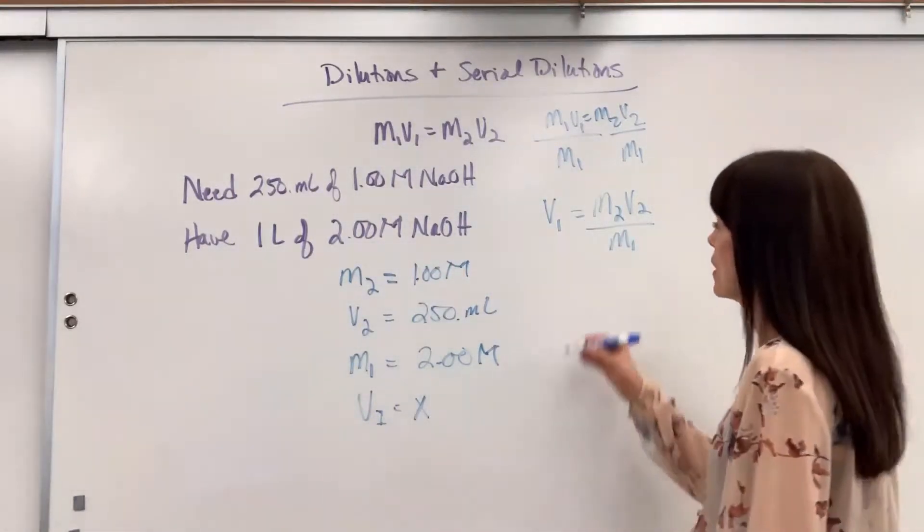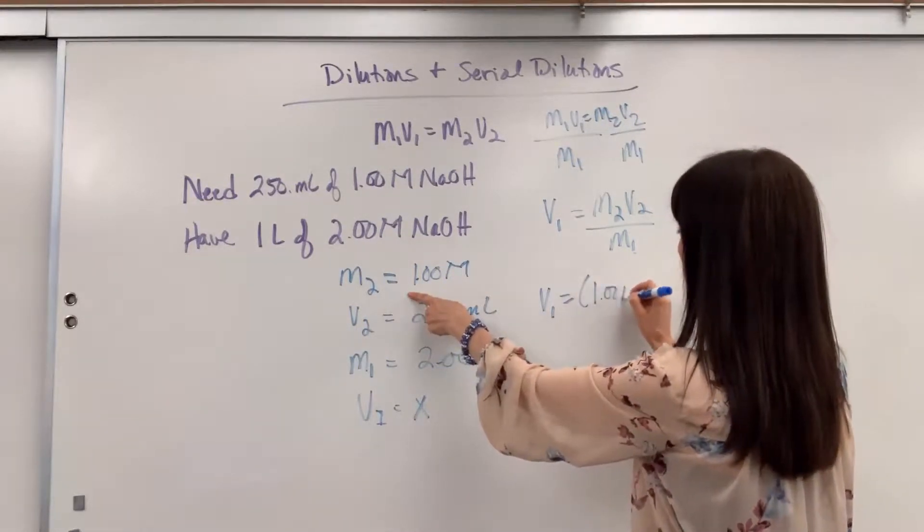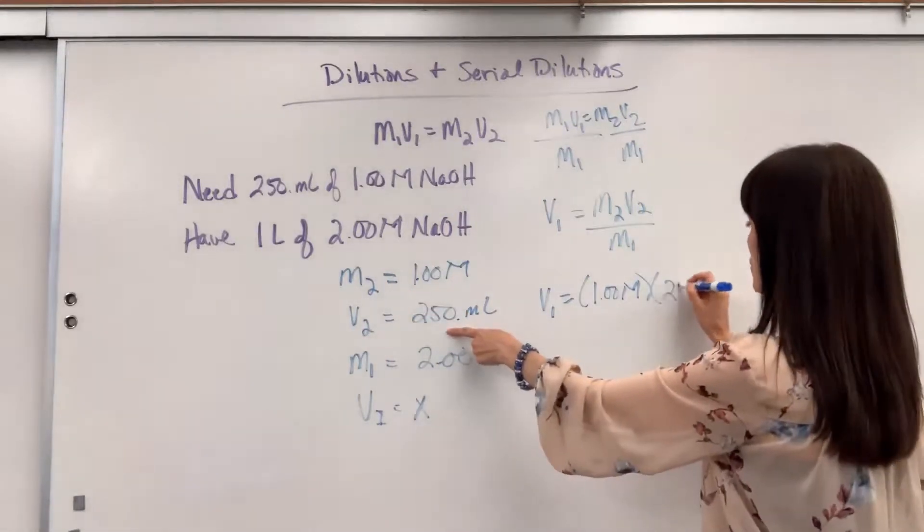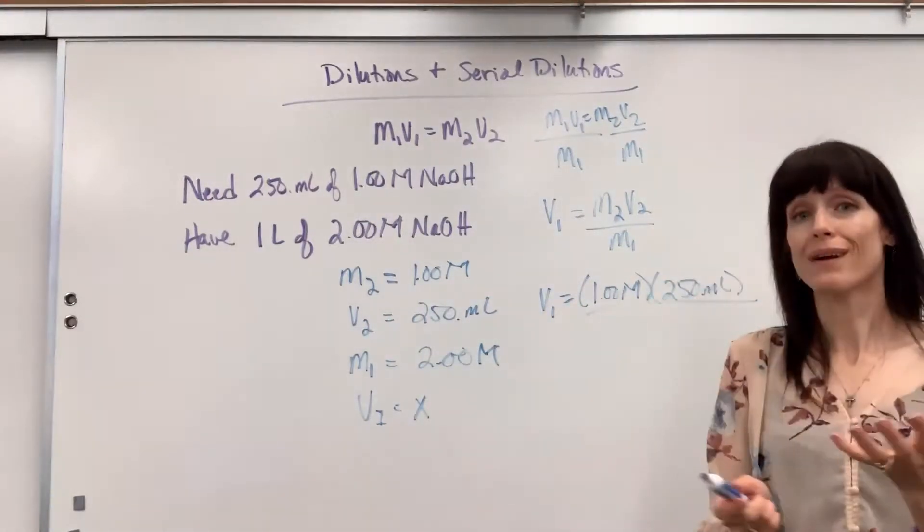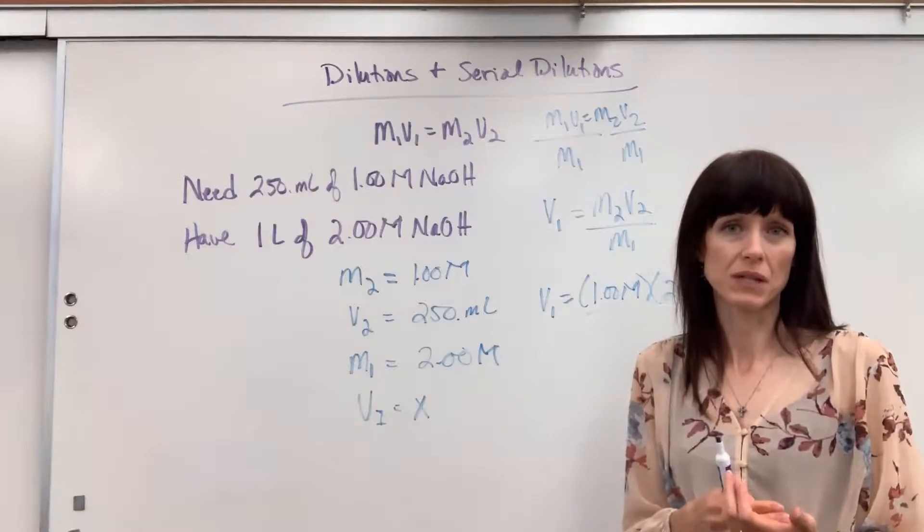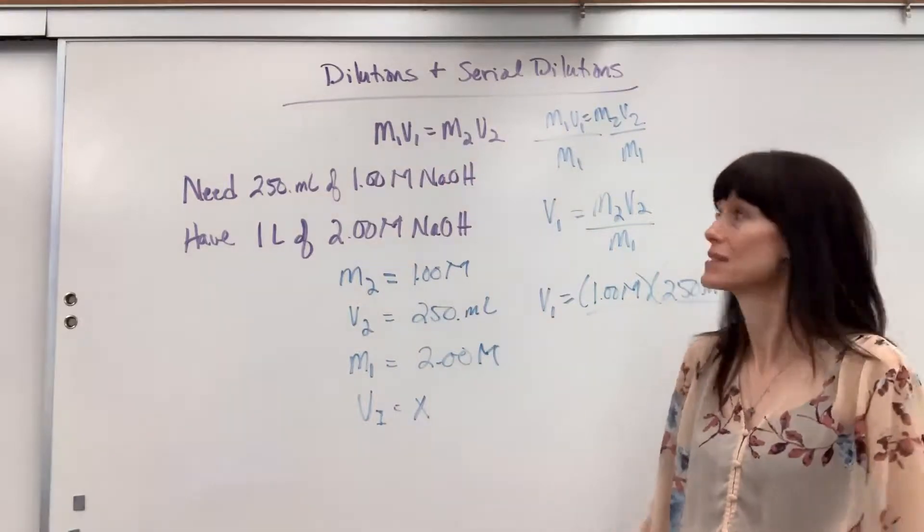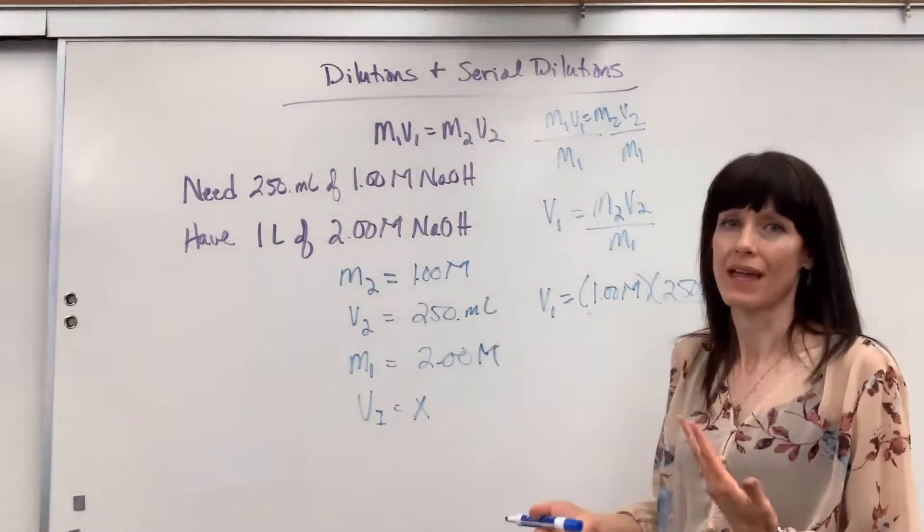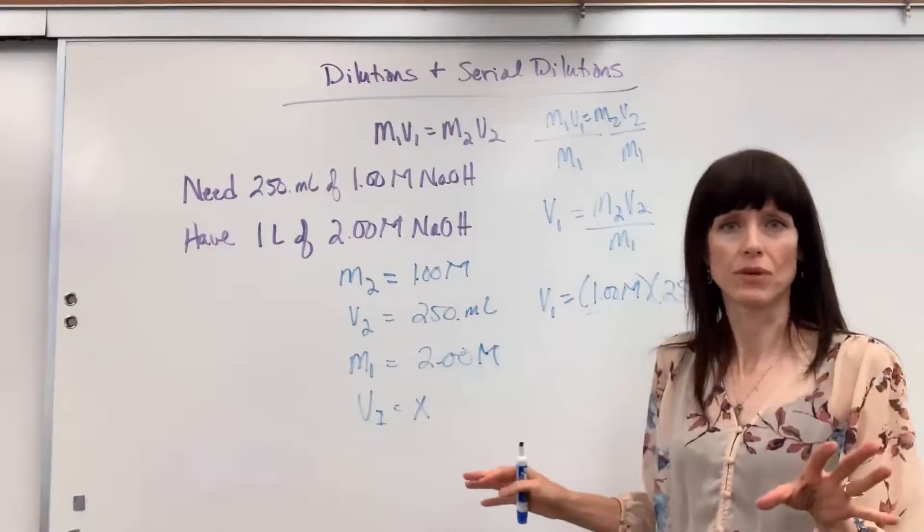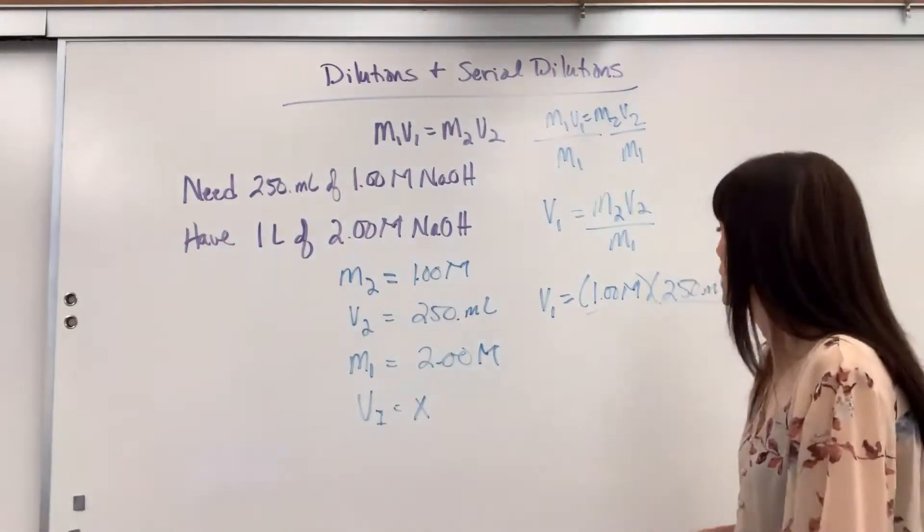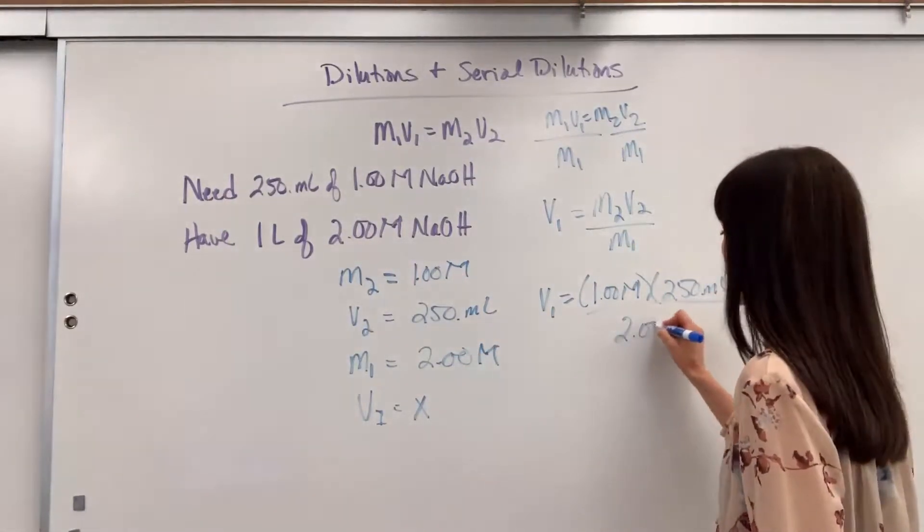Now we just plug everything in. So the volume equals M2, one molar times the 250 mils. It's a good time to bring this up. You will recall that the unit for molarity is moles per liter, so we always have to deal with liters, except for with the dilution formula, and here's the reason why. Those units, as long as they're the same, they'll cancel. So you can use mils or liters, and really, only time that I want you to feel comfortable using mils or liters. So I can leave this as mils divided by my initial, which is two molar.